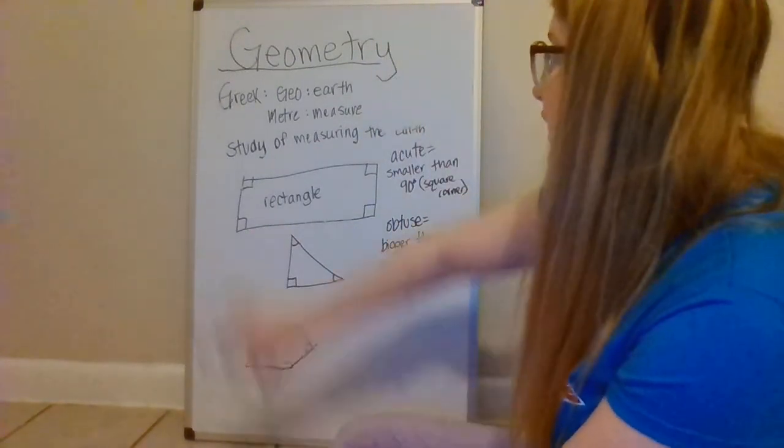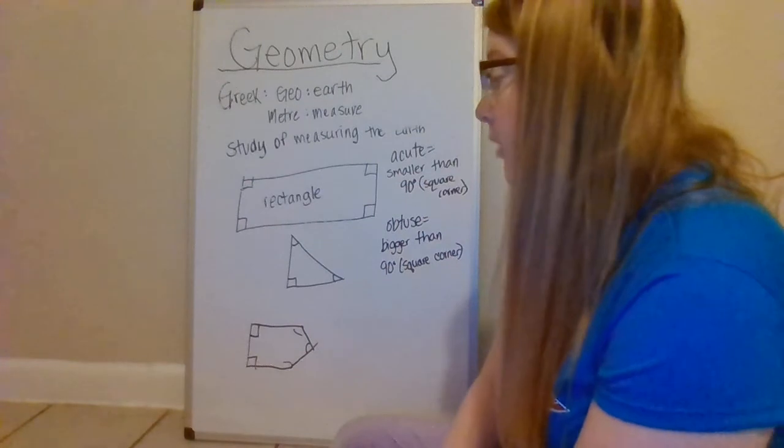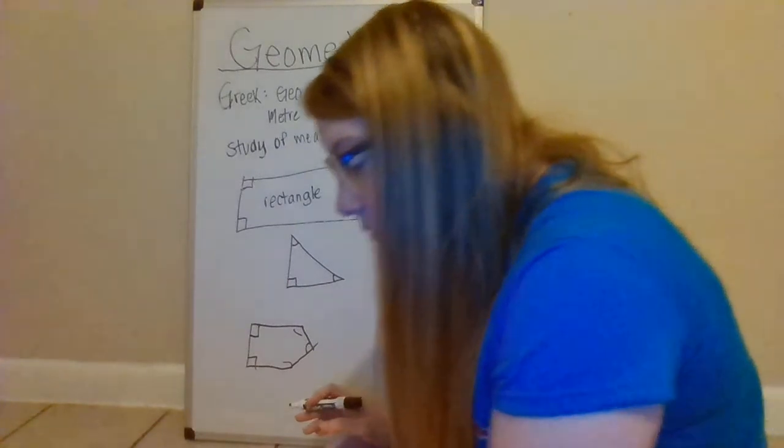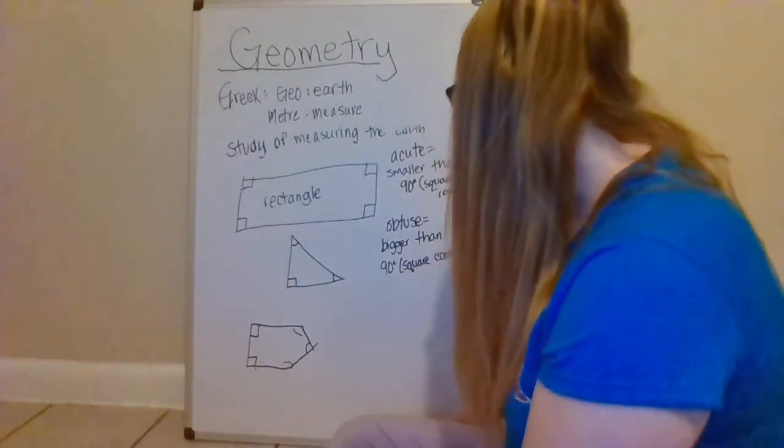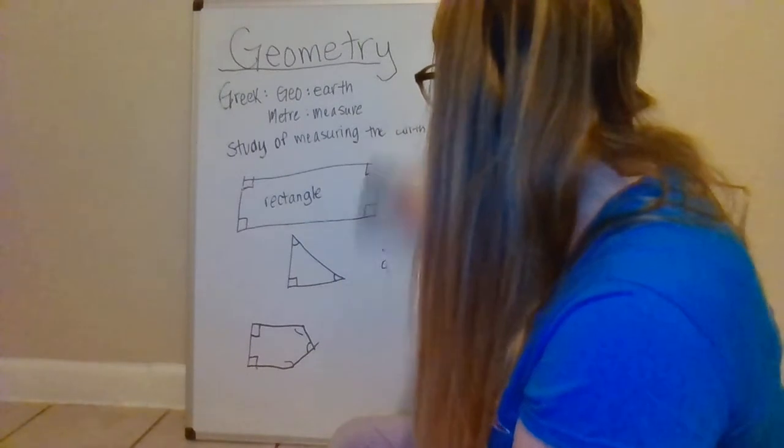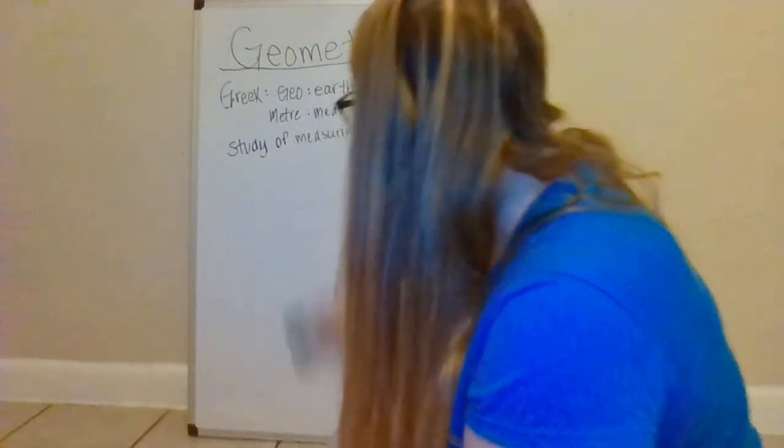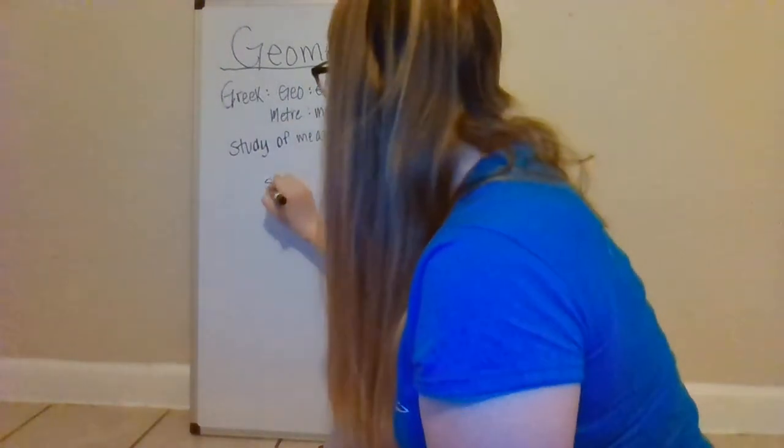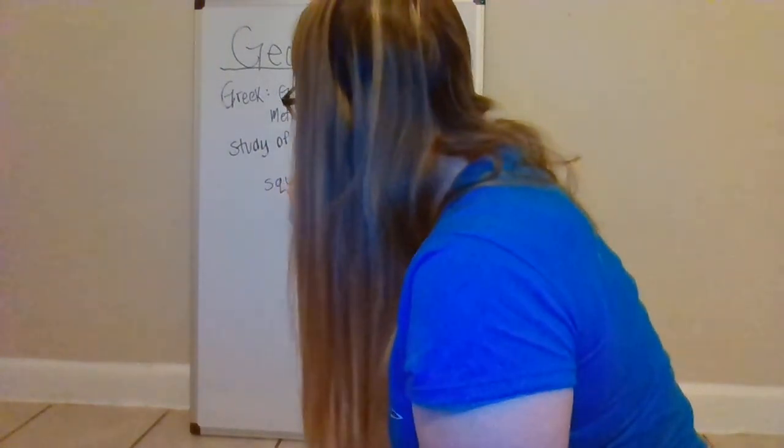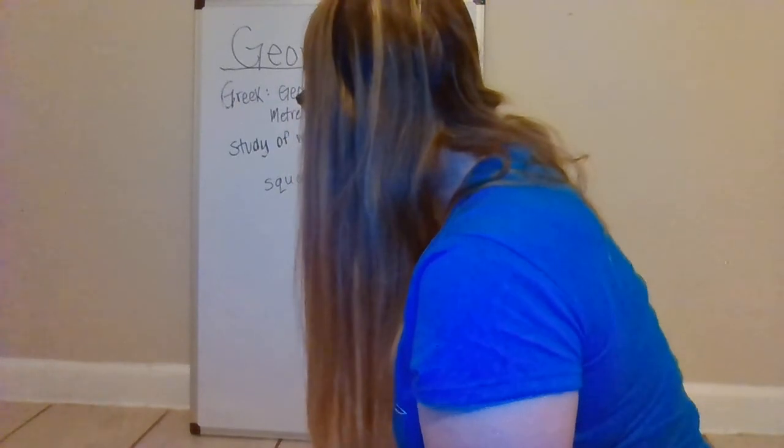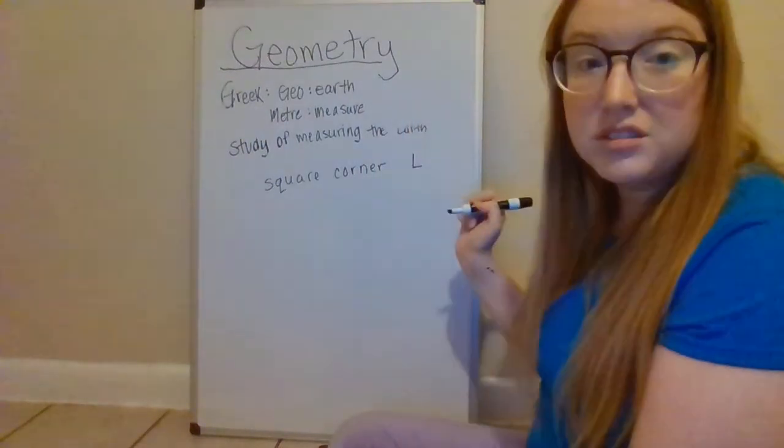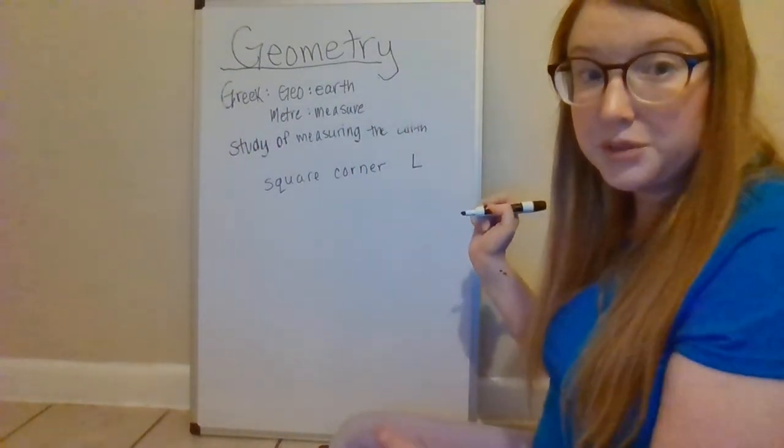So what we're learning in this lesson is that we can describe shapes by their lines or by their angles. The next part of the lesson goes through what shapes have one square corner. So we just have to remember the term square corner, which is basically an L.